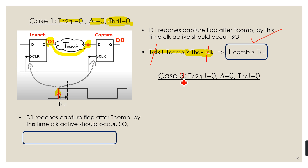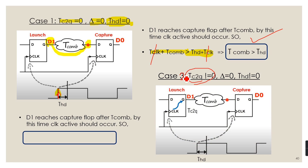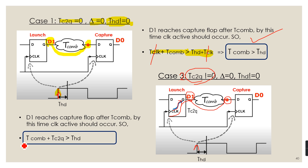In Case 2, the clock-to-Q delay is non-zero. On the active edge of the clock, the launch flip-flop takes a finite amount of time to produce stable output D1, after which D1 takes T_com to reach the input of the capture flip-flop. The data arrival expression is altered, and the hold condition becomes: T_com + T_C2Q > T_hold.